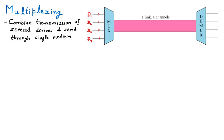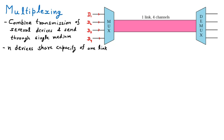We can also say that n devices share the capacity of one link. It is not only four devices — it can be 20 devices. They send their data which is combined together, and then from one channel or one medium the data passes through. This is multiplexing.